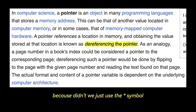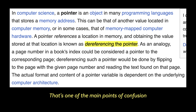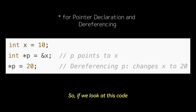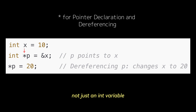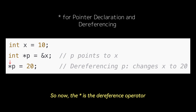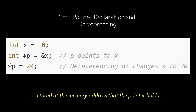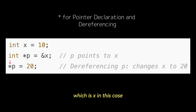You might find this confusing because didn't we just use the asterisk symbol to declare the pointer? And you'd be correct — that's one of the main points of confusion. It's used for pointer declaration as well as dereferencing. So if we look at this code, in this line we're doing pointer declaration. The asterisk indicates that the variable is a pointer to a type; here it tells the compiler that p is a pointer to an int, not just an int variable. And in this line we are doing dereferencing, so the asterisk is the dereference operator. It accesses or modifies the value stored at the memory address that the pointer holds. So here, asterisk p refers to the value that p points to, which is x in this case.